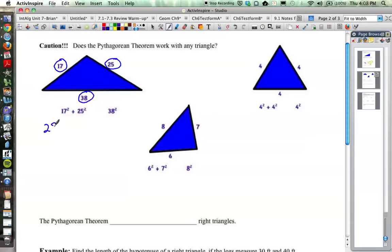And so 17 squared is 289, and 25 squared is 625. And we're going to take a look at 38 squared, which is 1,444. 289 plus 625 is 914, which is definitely less than 1,444.